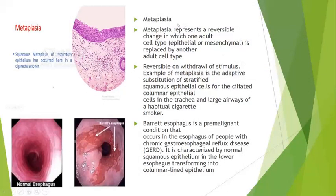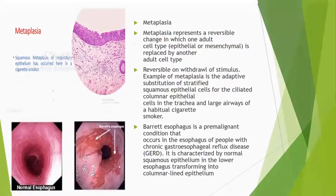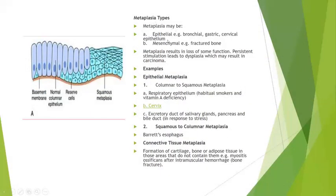Now let's discuss metaplasia. Metaplasia represents a reversible change in which one adult cell type is replaced by another cell type. It is reversible on withdrawal of the stimulus. An example is the adaptive substitution of stratified squamous epithelium for the ciliated columnar epithelia in the trachea and large airways of a habitual cigarette smoker. Then there is Barrett's esophagus, a pre-malignant condition occurring in people with chronic esophageal reflux disease (GERD), characterized by transformation of normal squamous epithelium in the lower esophagus into columnar-lined epithelium. Persistent stimulation leads to dysplasia, which may result in carcinoma.